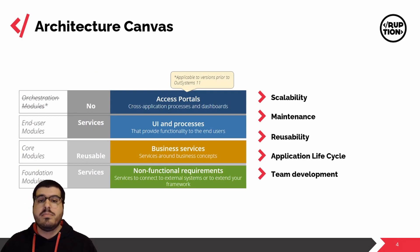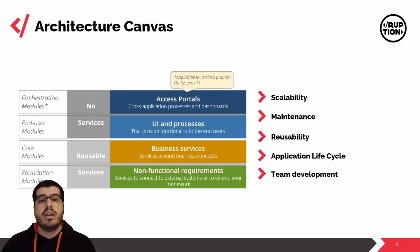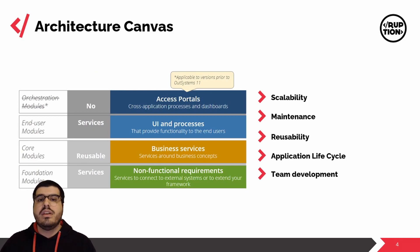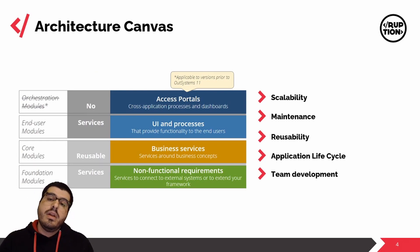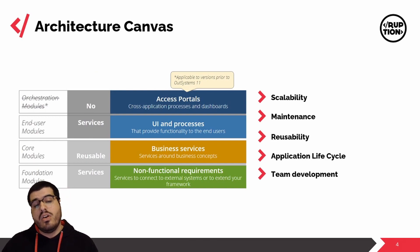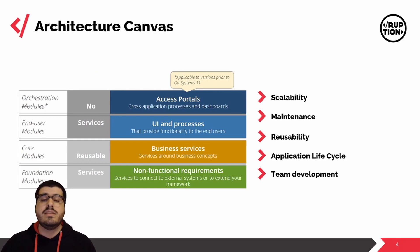The architecture canvas is composed of four layers. The first one is the orchestration layer, followed by the end user layer. Then you have the core layer, and at the end you have the library layer. The architecture canvas helps you with the reusability of your modules and code, the scalability of your applications, the maintenance of everything that you develop, and in reality it is just going to help with the application lifecycle. Not only this, but if everything is well placed, it also helps with team development since it's going to be easier to get new people in and accustomed to the way that things are built.